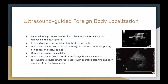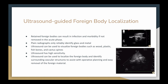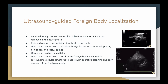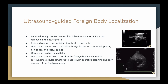With ultrasound-guided foreign body localization, retained foreign bodies in the acute phase can cause infection and even morbidity if not removed. Plain radiographs are only really reliable for glass or metal, but ultrasound is great because you can visualize foreign bodies like wood, plastic, fish bones, or even cactus spines. Ultrasound also has a really high sensitivity and lets you see the vascular structures surrounding the foreign body, which is helpful for operative planning and easy removal.